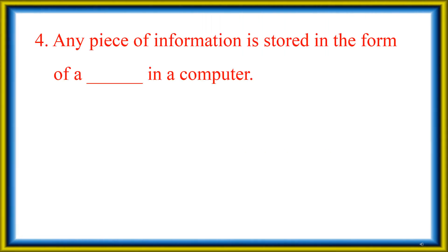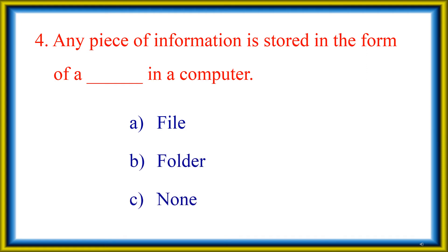The fourth question: any piece of information is stored in the form of a dash in a computer. The options are — Option A: File. Option B: Folder. Option C: None. All information is stored in the computer. The answer is File.